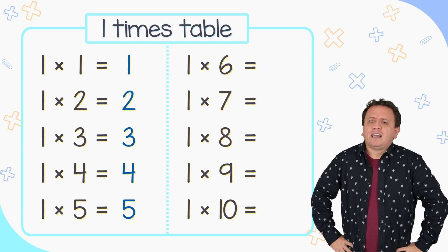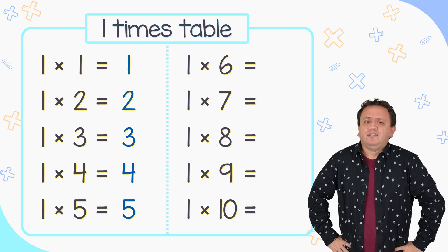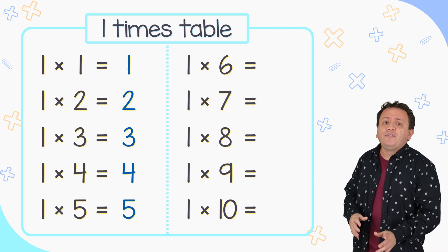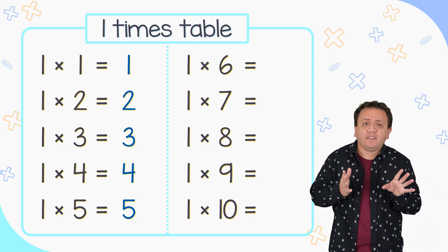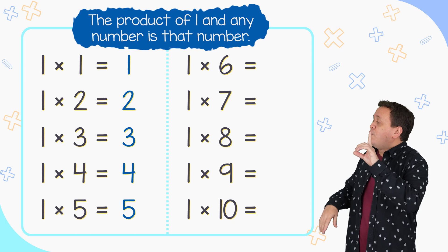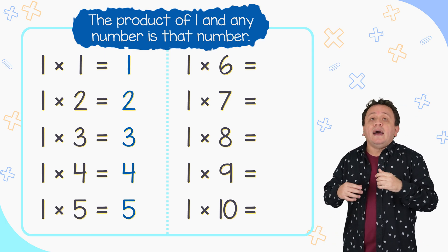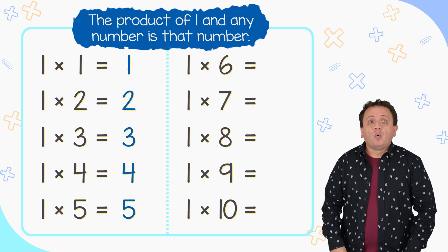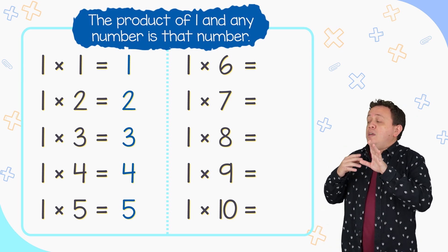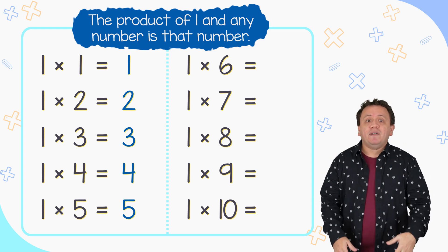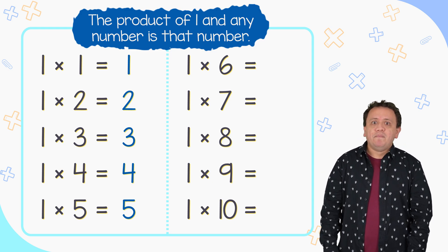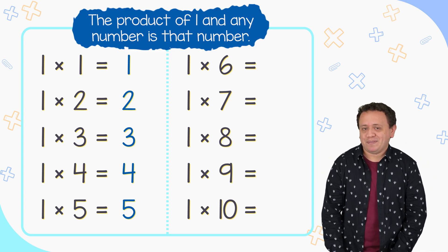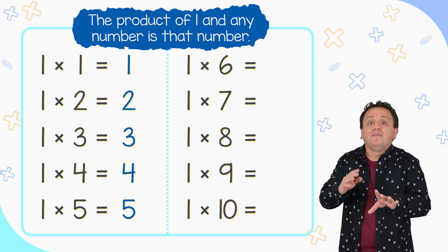This multiplication table is a breeze, right? Well, we have to remember a property: the product of 1 and any number is that number. Once again, the product of 1 and any number is that number. This property is a piece of cake, isn't it?